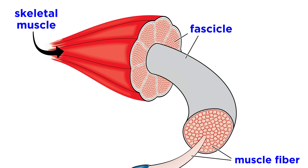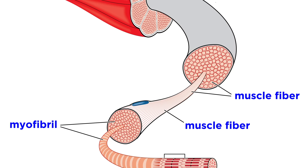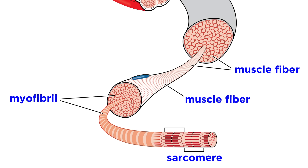As we recall, any skeletal muscle is made of fascicles, and each fascicle is made of muscle fibers, which are the individual multinucleated muscle cells. From there, we can zoom in farther on one of these myofibrils, which are in turn comprised of myofilaments, arranged into sarcomeres, and this is the contractile unit, the one that lets muscles do what they do.